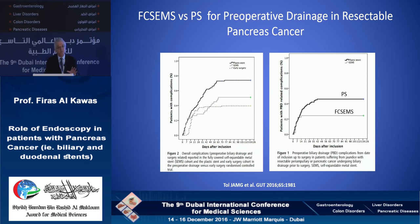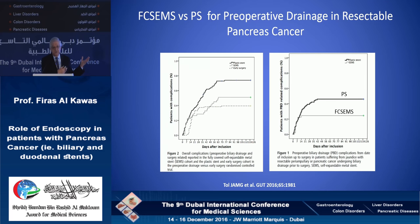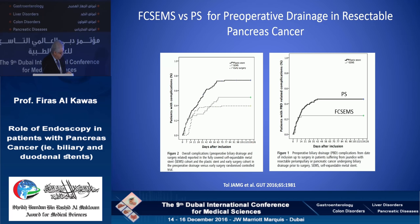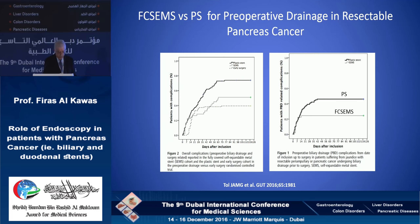The same group extended this study by adding a group of patients where they used self-expandable stents, because they had used 7 French stents in the majority of their original patients. The updated study compared plastic stent, surgery, and self-expandable stent groups, and showed significant improvement in results when a self-expandable stent was used. They recommended that if preoperative drainage is done, self-expandable stents should be used.